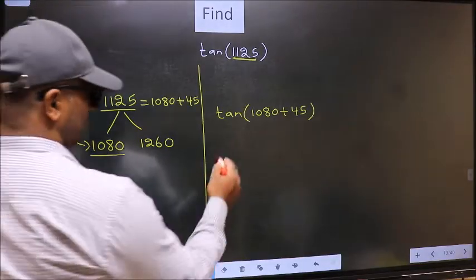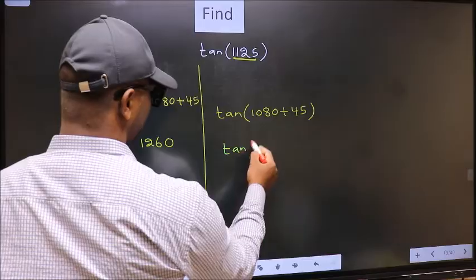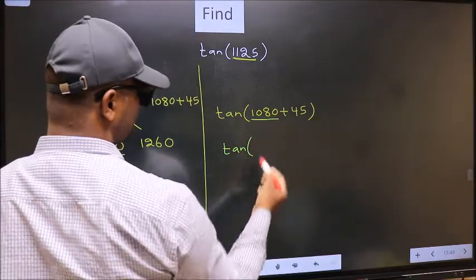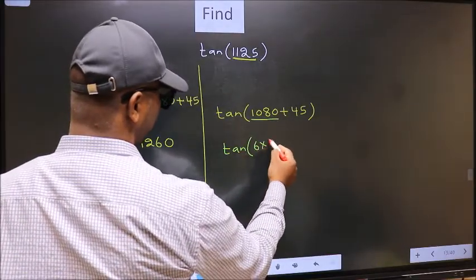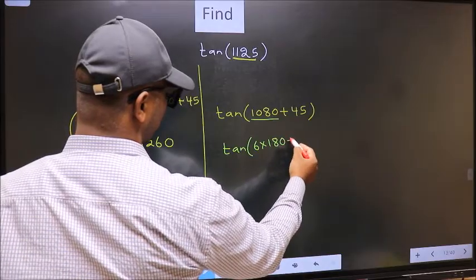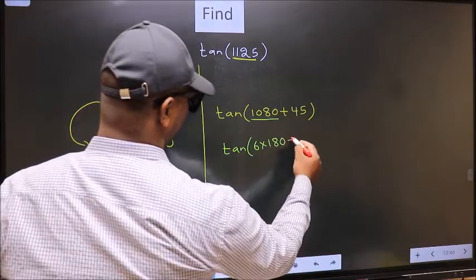Next, tan. In place of 1080, now we write 6 times 180 plus 45.